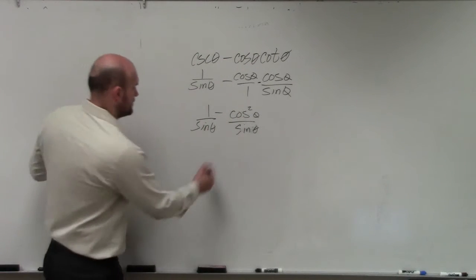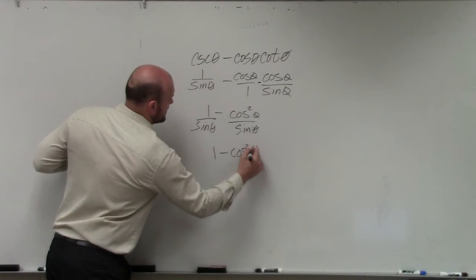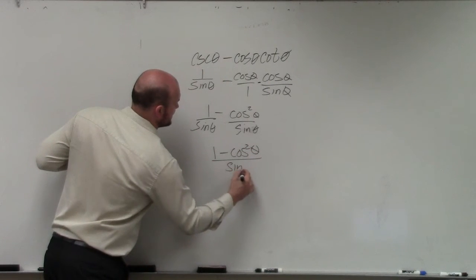You keep the denominator the same. So we have 1 minus cosine squared of theta all over sine of theta.